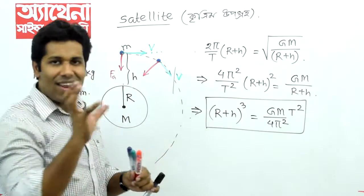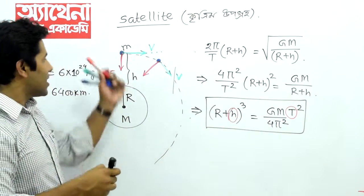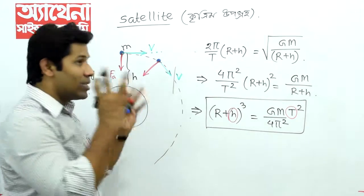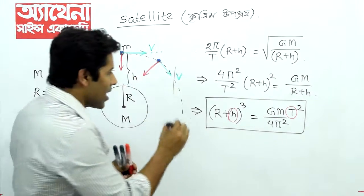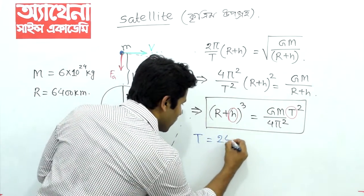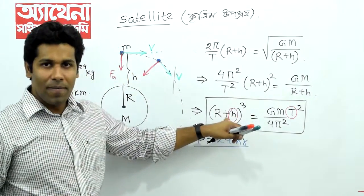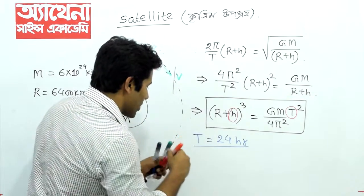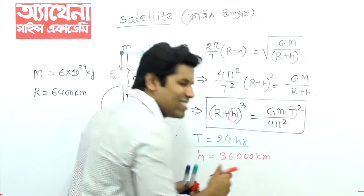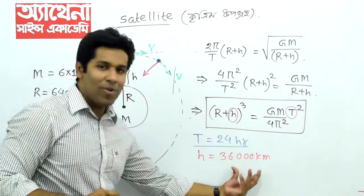જે આ સમીકરણ, નાખ variable. Variable હોય. Variable હૈ, એ આણ t. T, T, માં એ cketo, ઉપર જ, aekaale ને ગોળ.